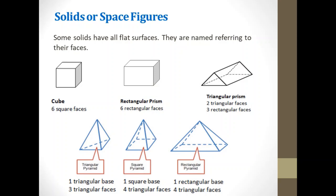Other examples are pyramids. So remember that pyramids are named according to the shape of its base. So the first example there is a triangular pyramid. A triangular pyramid has one triangular base and three triangular faces.